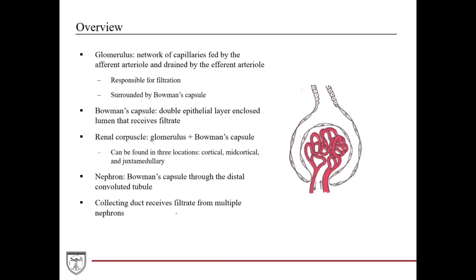First, an overview of the different terms we'll be mentioning throughout this lecture. You have the glomerulus, which we've mentioned previously in the first lecture. This is a network of capillaries created by the afferent arteriole, shown here in this diagram, and then drained by the efferent arteriole. It forms this complex network of capillaries that serves as part of the filtration apparatus for creating the filtrate, which then goes on to become the urine.